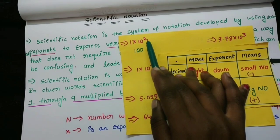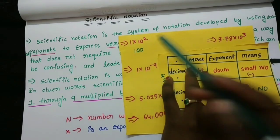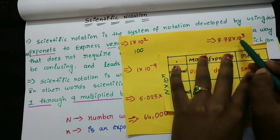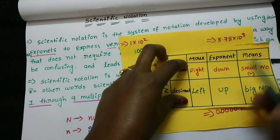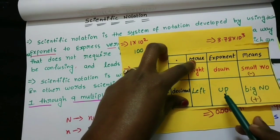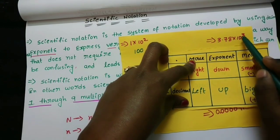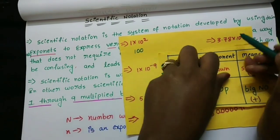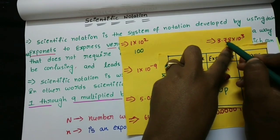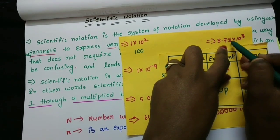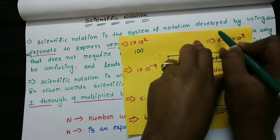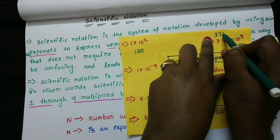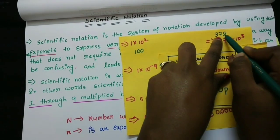Here are some examples of converting back from scientific notation. 1 into 10 to the power of 2 is 100. For 3.78 into 10 to the power of 3, the exponent is positive so the decimal moves to the right: counting 1, 2 — already two digits — then 3, 7, 8. The result has 2 digits to the left of the decimal.